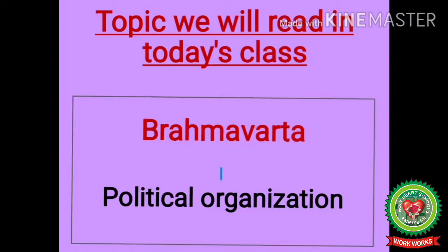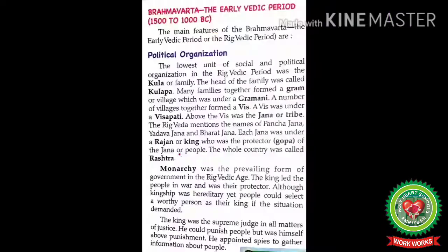Let's start reading the lesson: Brahmarath, the Early Vedic Period. The main features of the Brahmarath or the Early Vedic Period, also called the Rig Vedic Period, are as follows. The first feature is political organization. The lowest unit of social and political organization in the Rig Vedic period was the Kul, or family. The head of the family was called Kulpati.